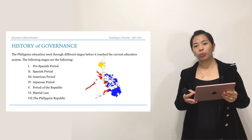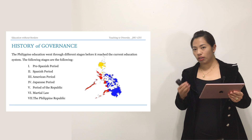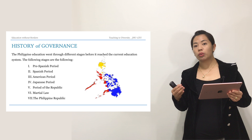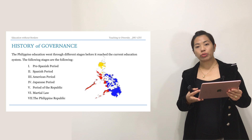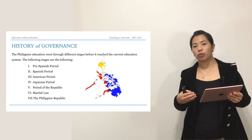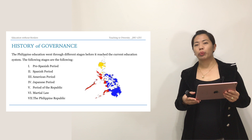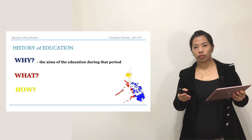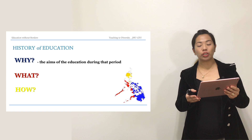The fourth colonizers were the Japanese. You can see the transitions that happened from pre-Spanish, Spanish, American, and Japanese, until we got our own independence or our own republic, and also when we had martial law, and lastly the Philippine Republic. Based on these seven stages, I will be discussing in detail the different aims, what was taught, and the different teachers who handled Filipinos during each time.